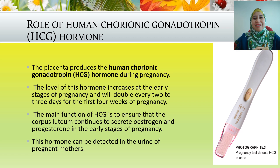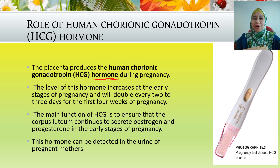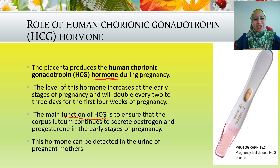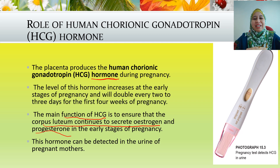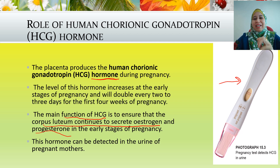During pregnancy, the placenta produces what we call Human Chorionic Gonadotropin — the HCG hormone. The level of this hormone increases at the early stages of pregnancy and doubles every two to three days for the first four weeks. The main function of HCG is to ensure that the corpus luteum continues to secrete estrogen and progesterone in the early stages of pregnancy, to keep the endometrium lining thickened. The hormone can also be detected in the urine of a pregnant mother — the picture shows a test kit used to check HCG levels to determine pregnancy.